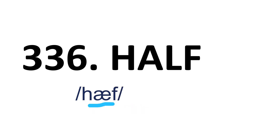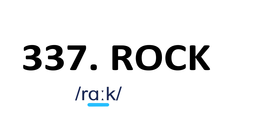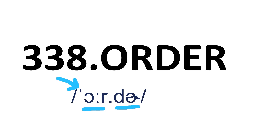Area — it's a three-syllable word and stress is on the first syllable. Area. Half — it's a one-syllable word. Half. Rock — it's a one-syllable word. Rock. Order — it's a two-syllable word and the stress is on the first syllable. Order.